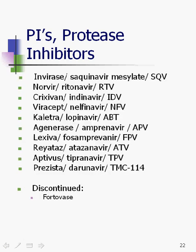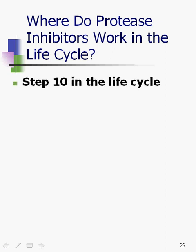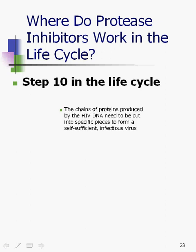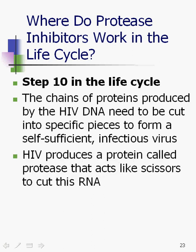We also have protease inhibitors. There are a lot of them, and these were the meds introduced around 1996 — one of the places where the tide really turned with HIV. We have one discontinued one, Fortovase, but its active ingredient lives on in Invirase. Where do protease inhibitors work in the life cycle? They work at step 10 — the maturation step. The chains of proteins the CD4 nucleus produces need to be cut into specific pieces so that HIV can become mature and become an infectious virus.